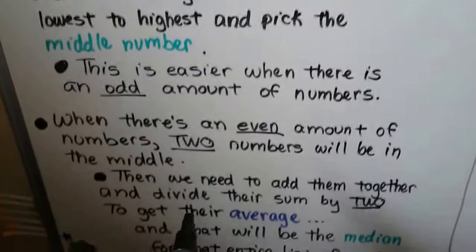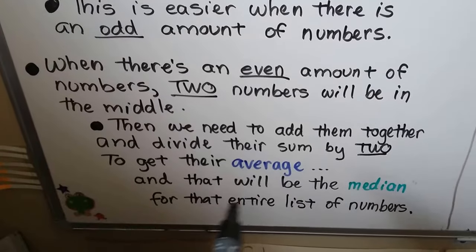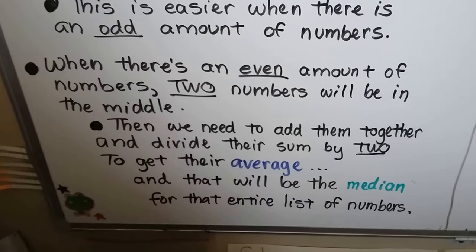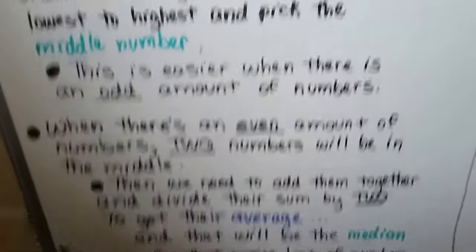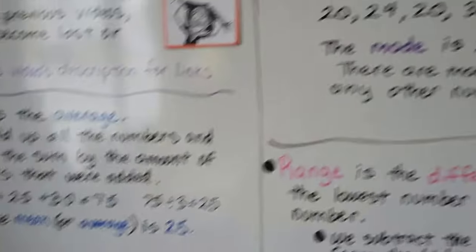We take the two middle numbers and we get their average just like we did up here. We add them together, divide it by two because there's two numbers. We get the average and then that will be the median for the entire list of numbers.